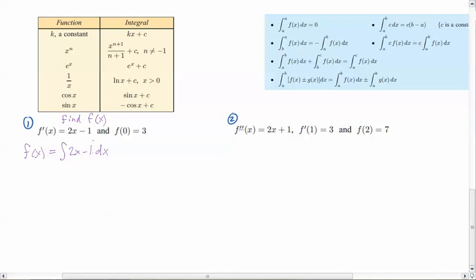Now I'm going to go ahead and take the integral. I'm going to use this property right here, the fourth property where I can separate it into two pieces. So for the first part, 2x, that's going to be using my second rule here where I'm going to add 1 to the exponent and then divide by that same number.